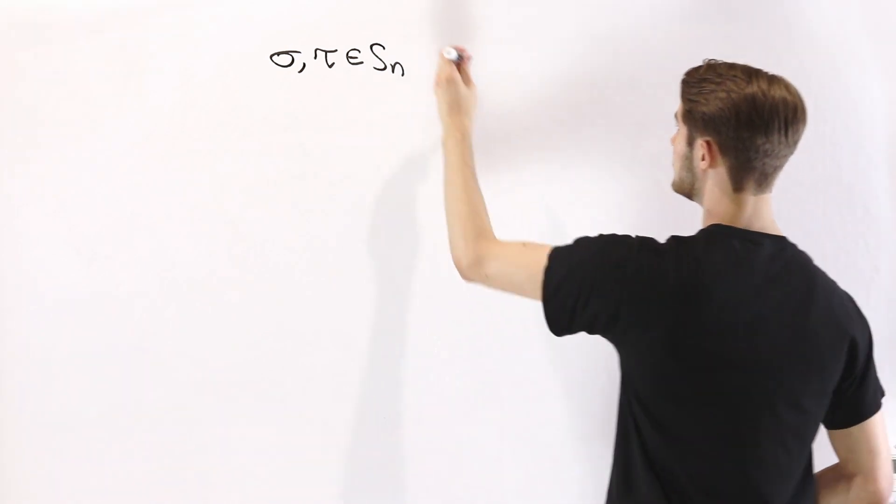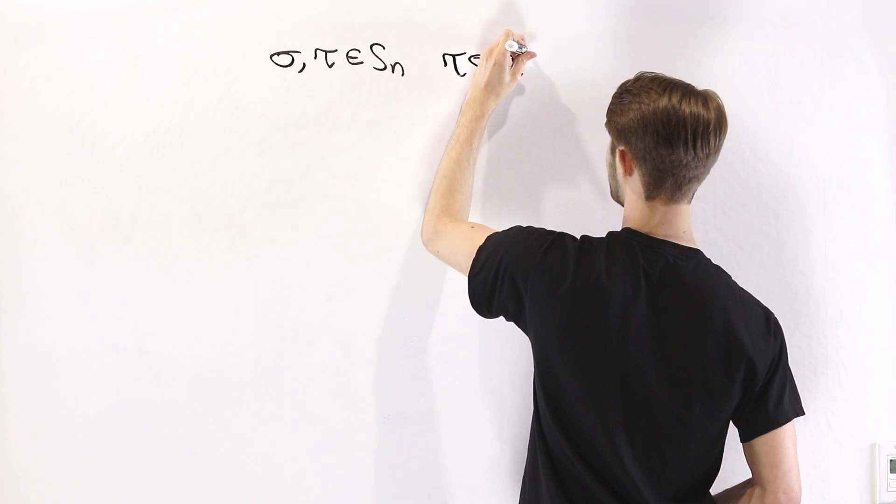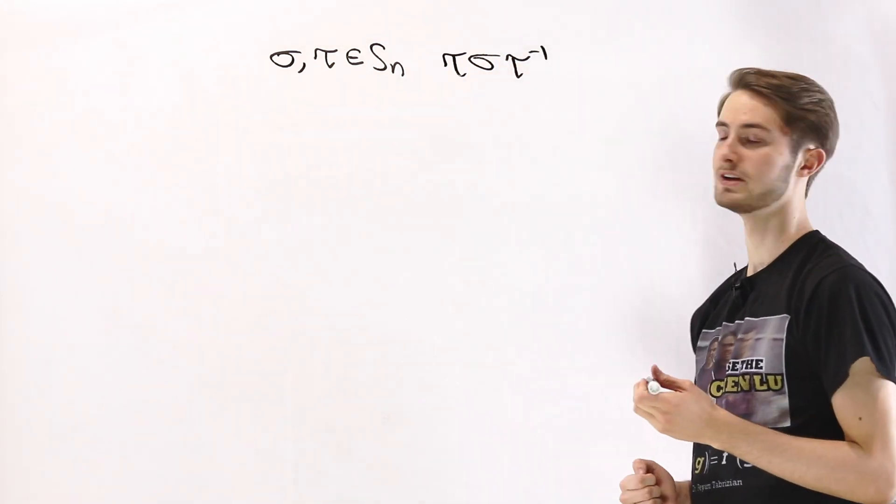We want to examine what is tau sigma tau inverse. So we conjugate sigma by the element tau.